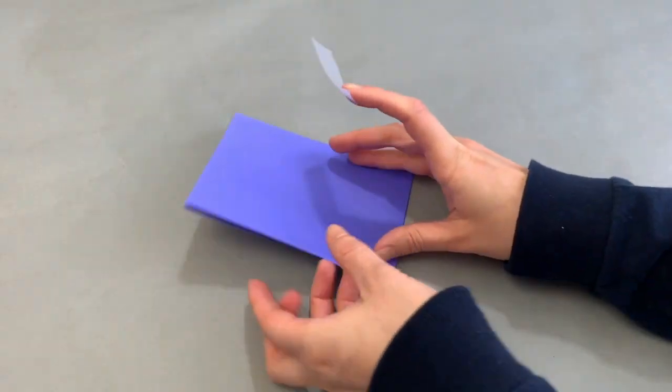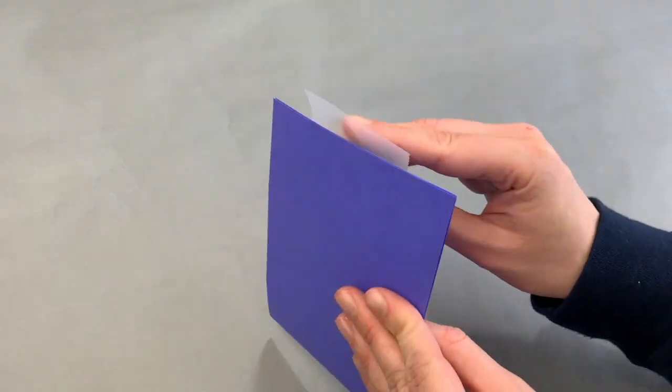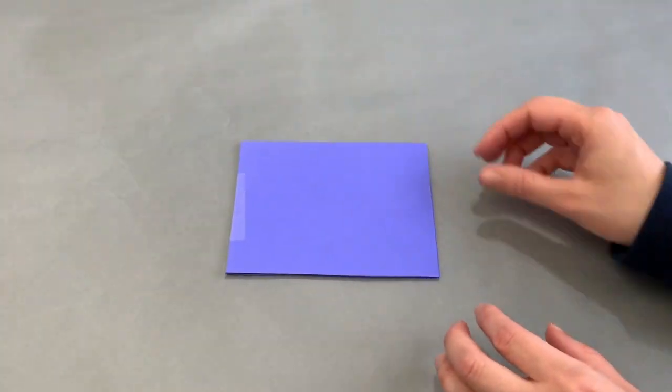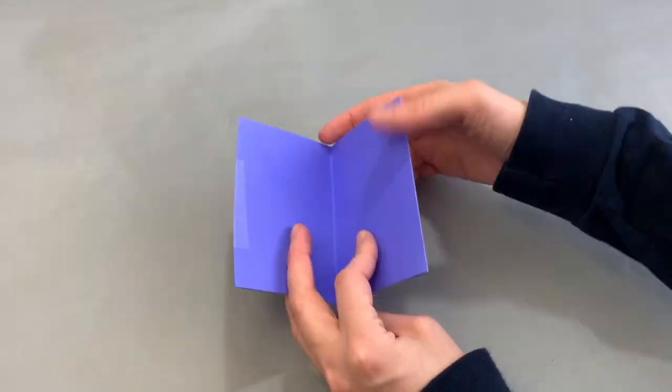To make a box, fold the paper in half and tape the two ends together. Then fold it in half again and open it up.